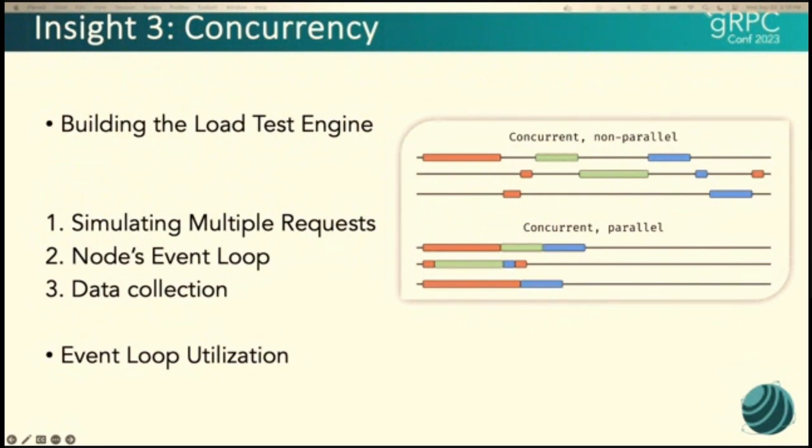And then so what we did was for data collection was each worker thread would use the inter-thread communication and pass messages between each other and then back to the main thread to aggregate all that data. So these would be things like CPU usage, like I said, latency and throughput.